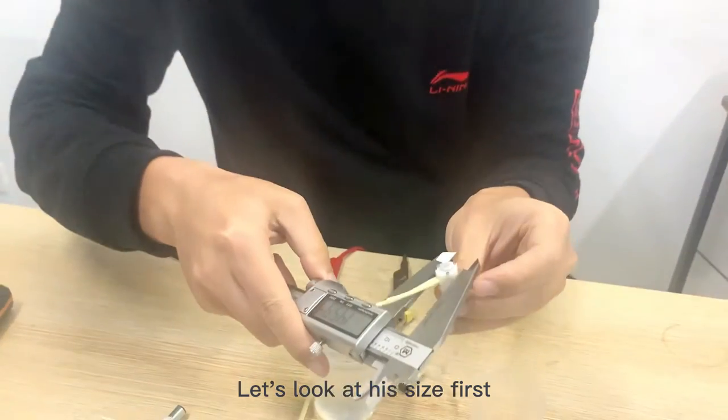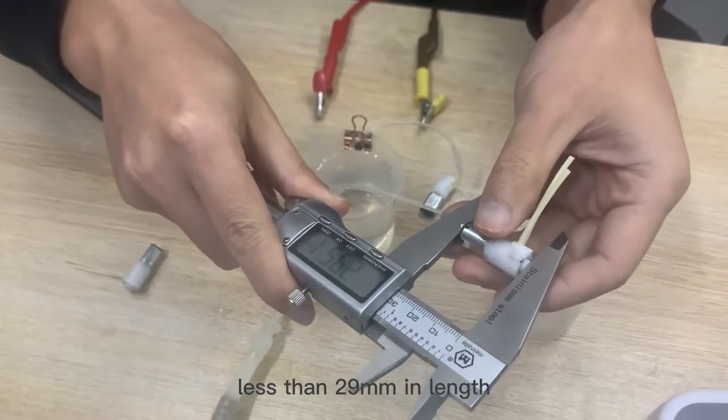Let's look at the specs first: diameter 1.0 mm, length less than 29 mm.